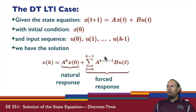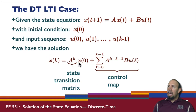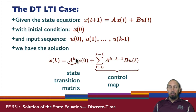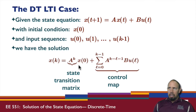The natural response involves something called the state transition matrix. For the linear time-invariant discrete-time system, the state transition matrix is A raised to the power k. We also have something called the control map, which takes the input sequence and gives us the value of a state. These two components — the state transition matrix and the control map — are very powerful concepts.